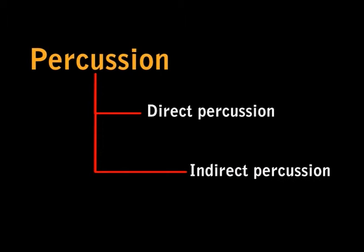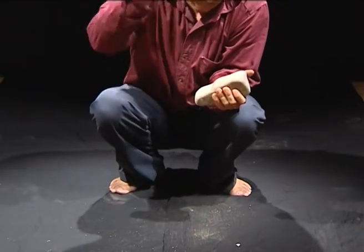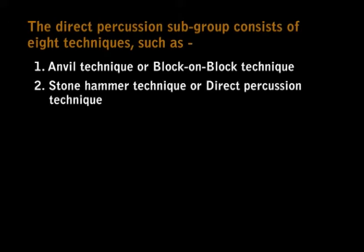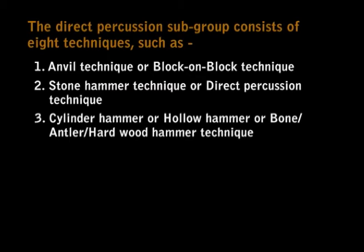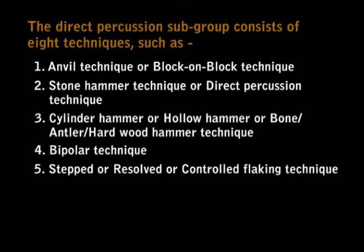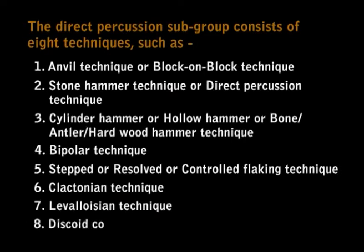The percussion group has two subgroups, namely direct percussion and indirect percussion. Now let us study the direct percussion flaking technique. Flaking by striking directly with a hammer is known as the direct percussion flaking technique. The direct percussion subgroup consists of techniques such as: anvil or block-on-block technique; stone hammer or direct percussion technique; cylinder hammer, hollow hammer, or bone, antler, or hardwood hammer technique; bipolar technique; step or resolve or control flaking technique; Clactonian technique; Levallois technique; and discoid core or Mousterian technique.